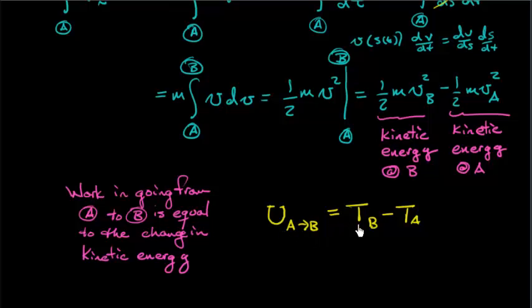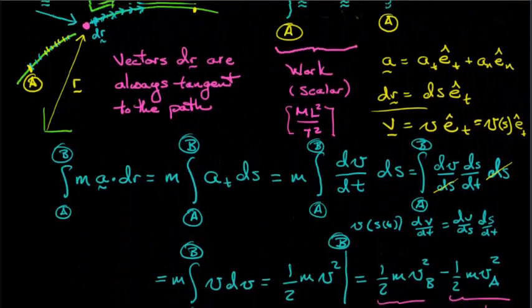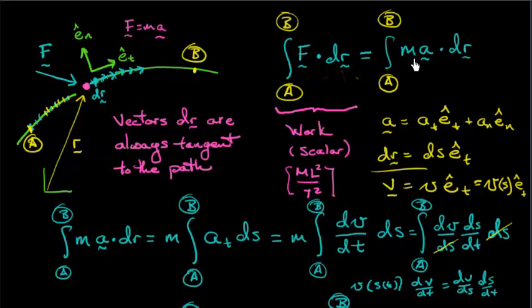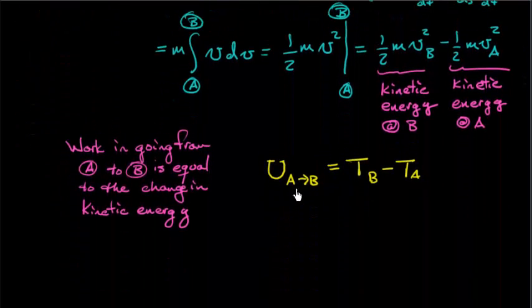It's kinetic energy at b minus kinetic energy at a. Remember this comes from F equals ma. F equals ma is buried in this very first step right here. So F equals ma says the vector force F produces an acceleration. Work energy principle, which comes from F equals ma, says the work, which is a scalar going from a to b, is equal to a change in kinetic energy.